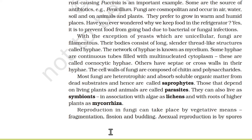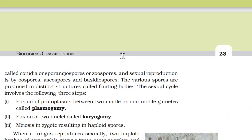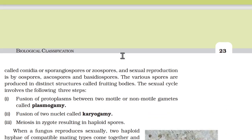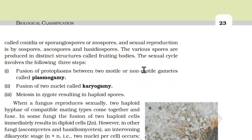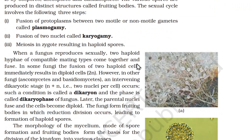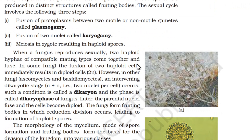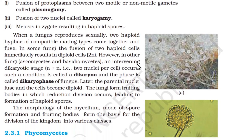Reproduction in fungi can take place by vegetative means — fragmentation, fission, and budding. Asexual reproduction is by spores called conidia, sporangiospores, or zoospores. Sexual reproduction is by oospores, ascospores, and basidiospores. The various spores are produced in distinct structures called fruiting bodies. The sexual cycle involves three steps: fusion of protoplasms between two motile or non-motile gametes called plasmogamy; fusion of two nuclei called karyogamy; and meiosis in the zygote resulting in haploid spores.